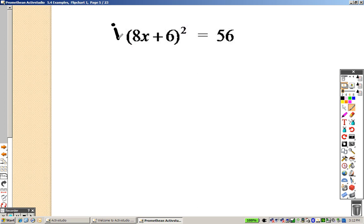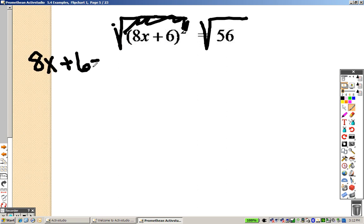To solve this problem, I once again square root those sides, because I'm trying to get rid of the squared, so that's gone. So I have 8x plus 6 equals the square root of 56. So as a plus or minus, because whenever you square root, you get a plus or minus.